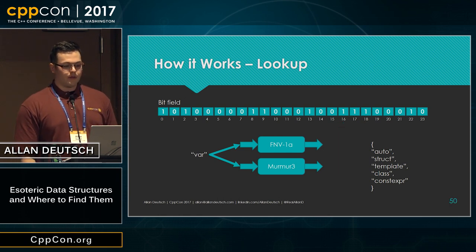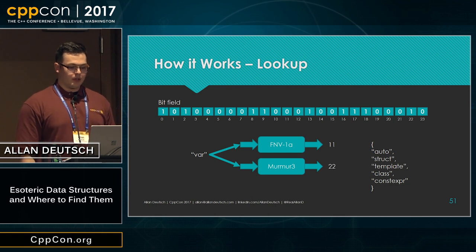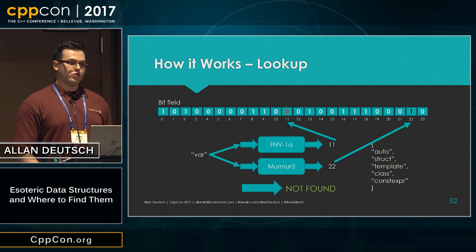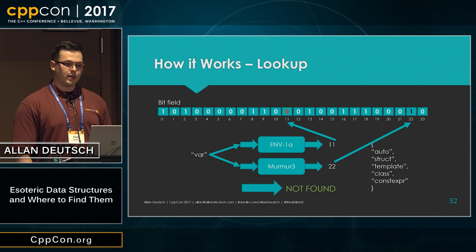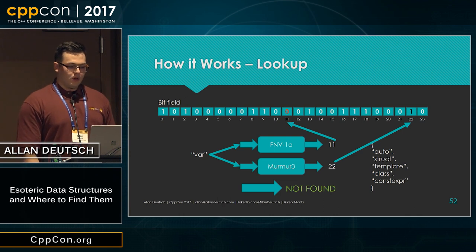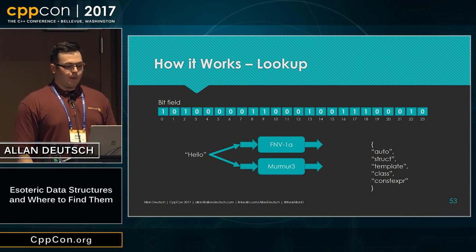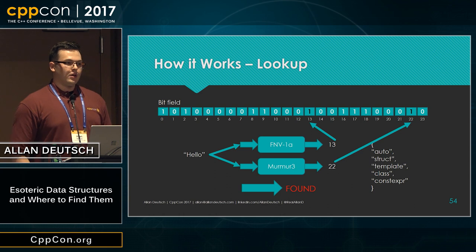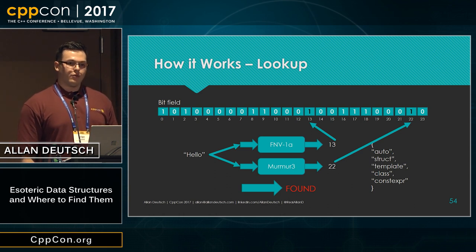Another example would be 'var' — we look that up and get a couple of bits. We check them and one of them is set, but the other is set to zero. So we know for sure that that element's not in there, because if it had been inserted, both of those bits would have been set to one. Another example is 'hello' — this one will point to a couple of bits that were both set to one. But as you can see in our example set, it was never actually inserted. This is the case you have to watch out for and be okay with if you're going to use a bloom filter, because it can be incorrect at times.